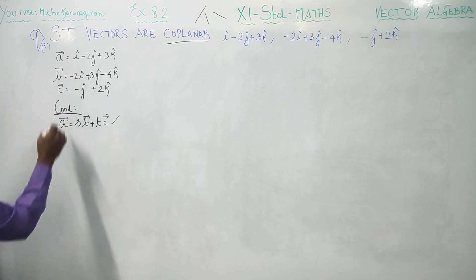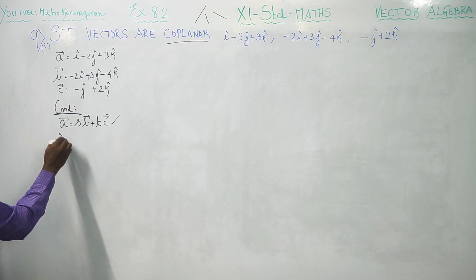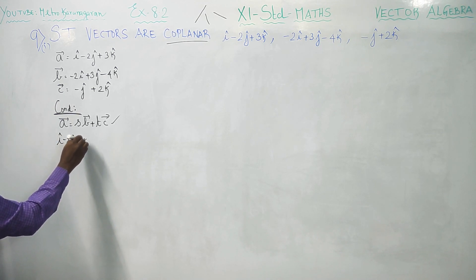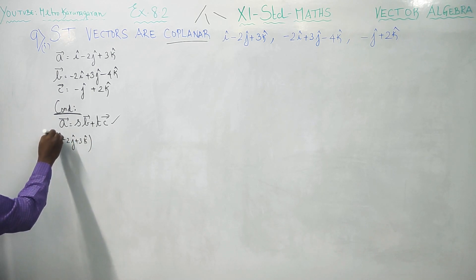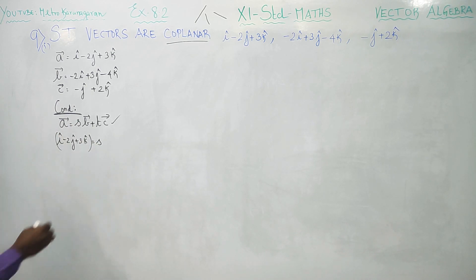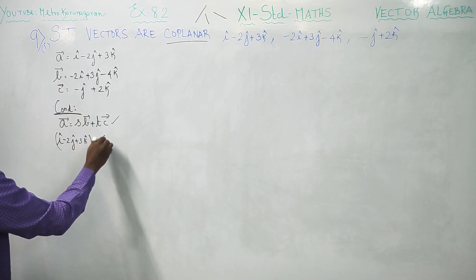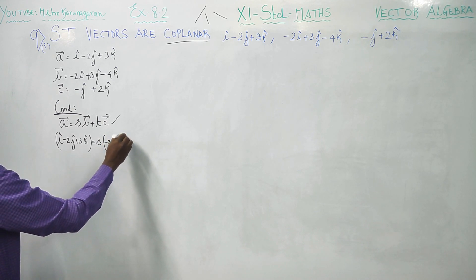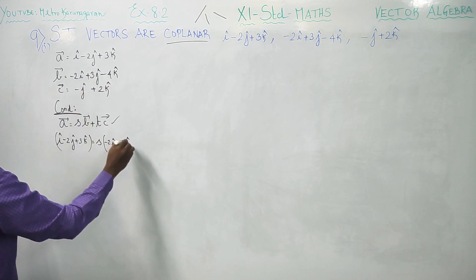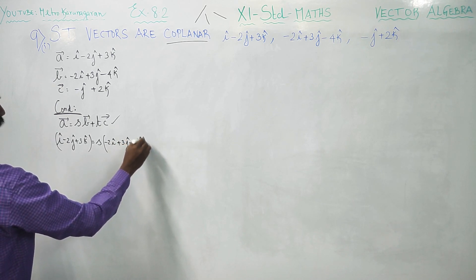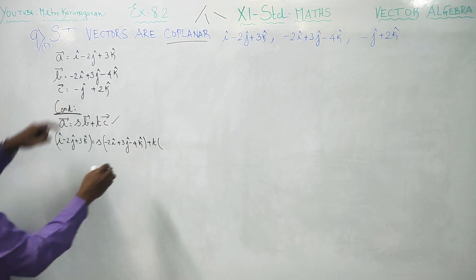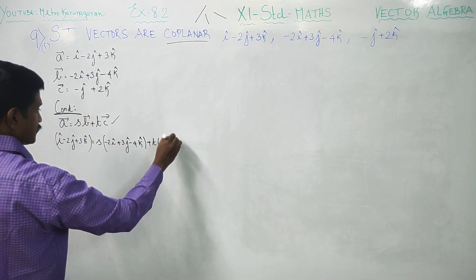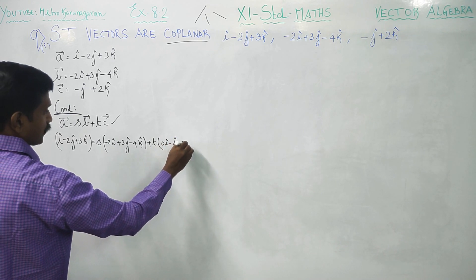I am going to start with a vector. My a vector is i minus 2j plus 3k, equal to some scalar s times b vector, which is minus 2i plus 3j minus 4k, plus t times c vector, where c vector is 0i minus j plus 2k.